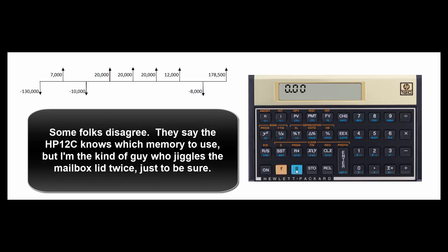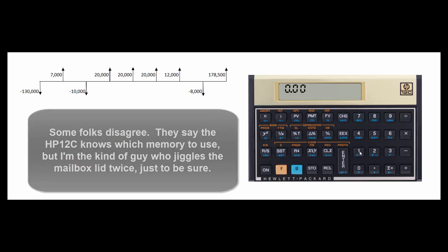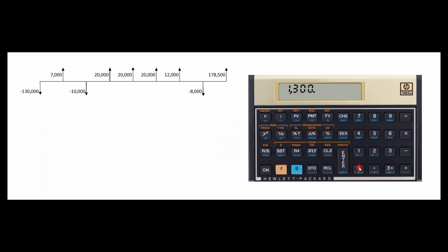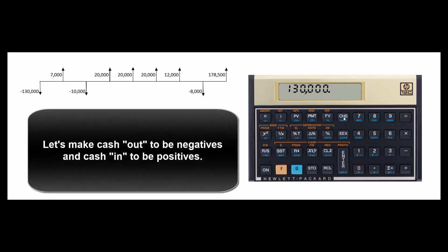I'm going to hit F Clear Registers. Technically you don't have to, because the calculator is smart enough to use only the new data you enter, but I like to start with a clean slate. So $130,000 is the initial cash flow out — we change the sign to make it negative, then hit G-CF0. We've told the calculator the initial cash outflow is $130,000.